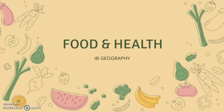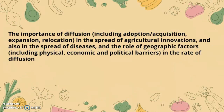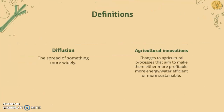This video is for food and health IB Geography: the importance of diffusion, including adoption, acquisition, expansion, and relocation in the spread of agricultural innovations and also in the spread of diseases, and the role of geographic factors including physical, economic, and political barriers in the rate of diffusion. Some definitions: diffusion is the spread of something more widely, and agricultural innovations are changes to agricultural processes that aim to make them more profitable, more energy- and water-efficient, or more sustainable.